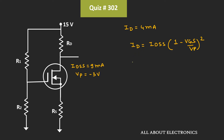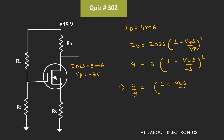This drain current ID is equal to 4mA, while IDSS is equal to 9mA. So we can say that 4mA equals 9mA times (1 minus VGS divided by minus 3) whole square. That means 4 by 9 is equal to (1 plus VGS divided by 3) whole square. Simplifying further, VGS comes out as minus 1V.